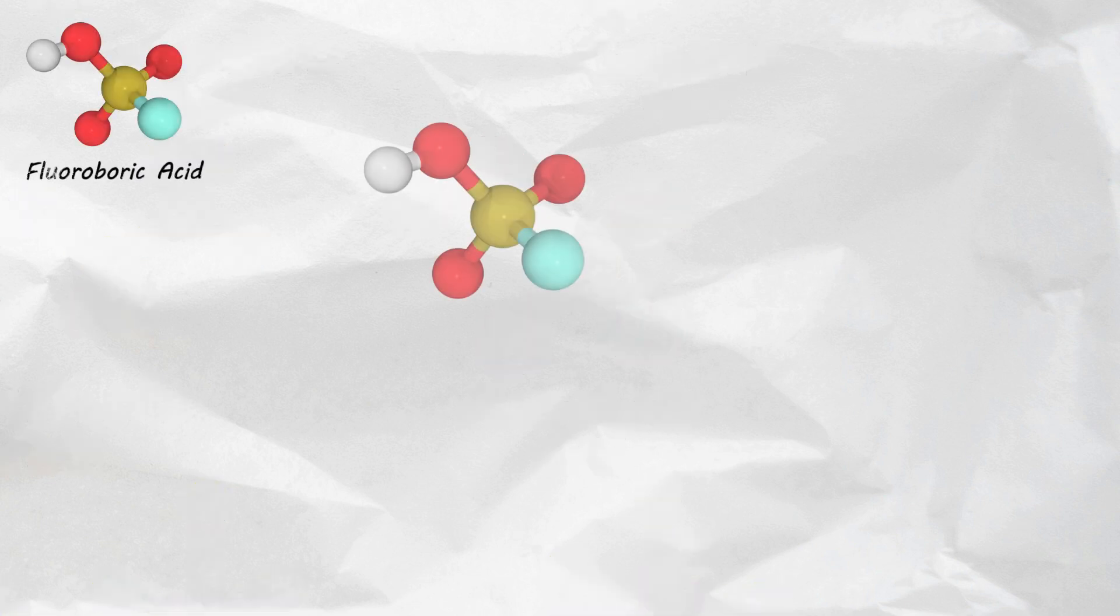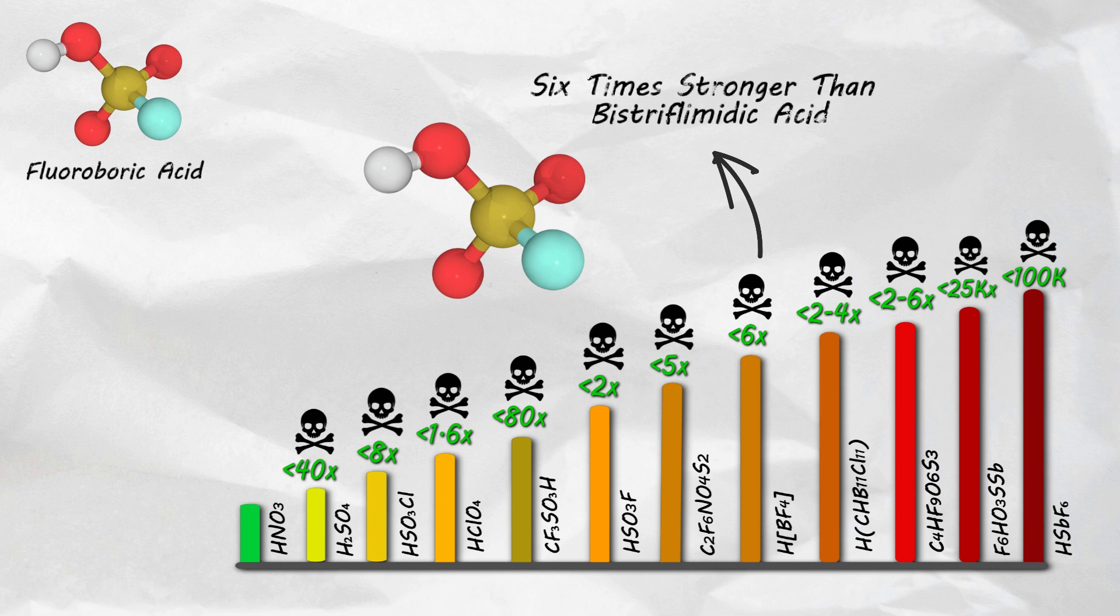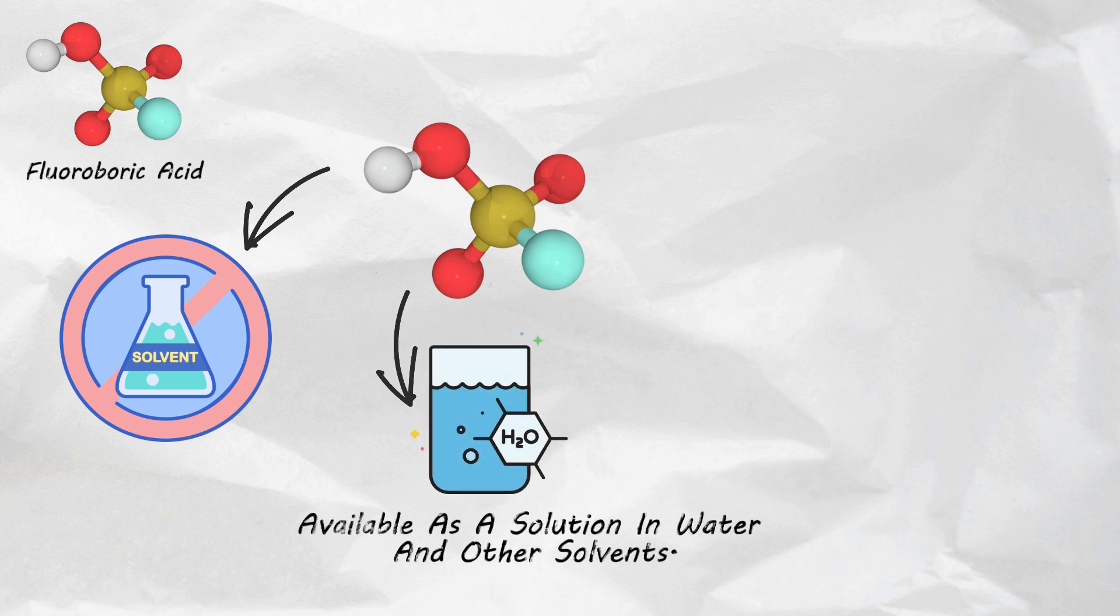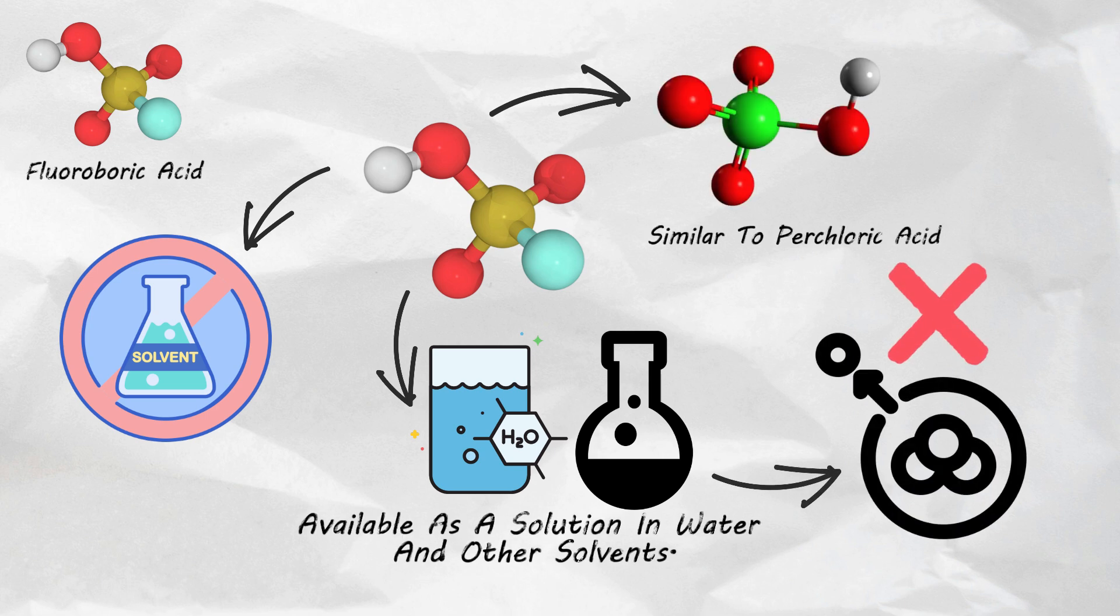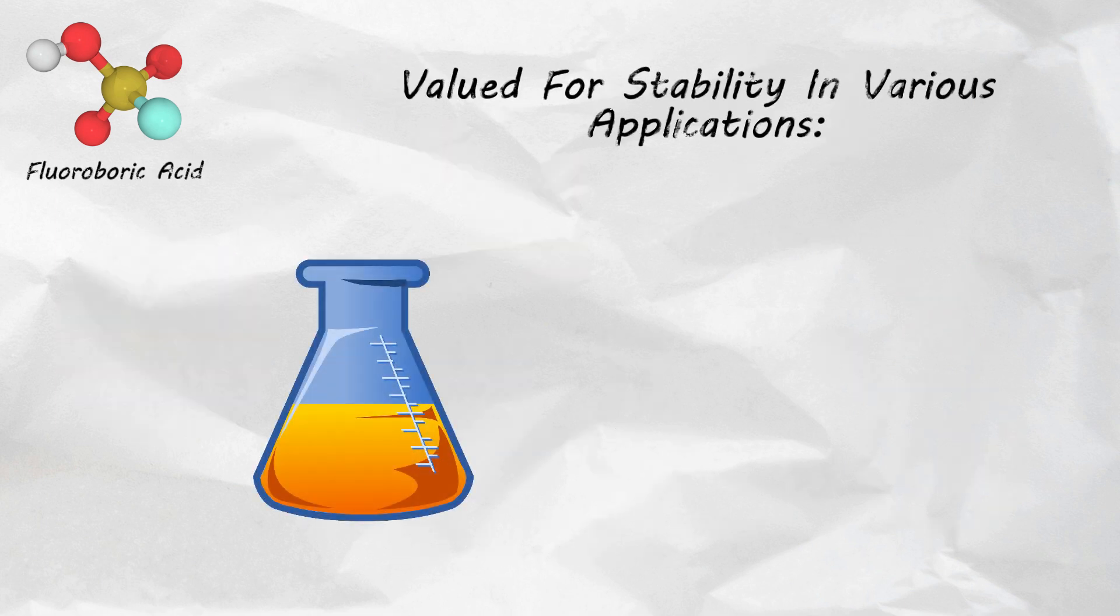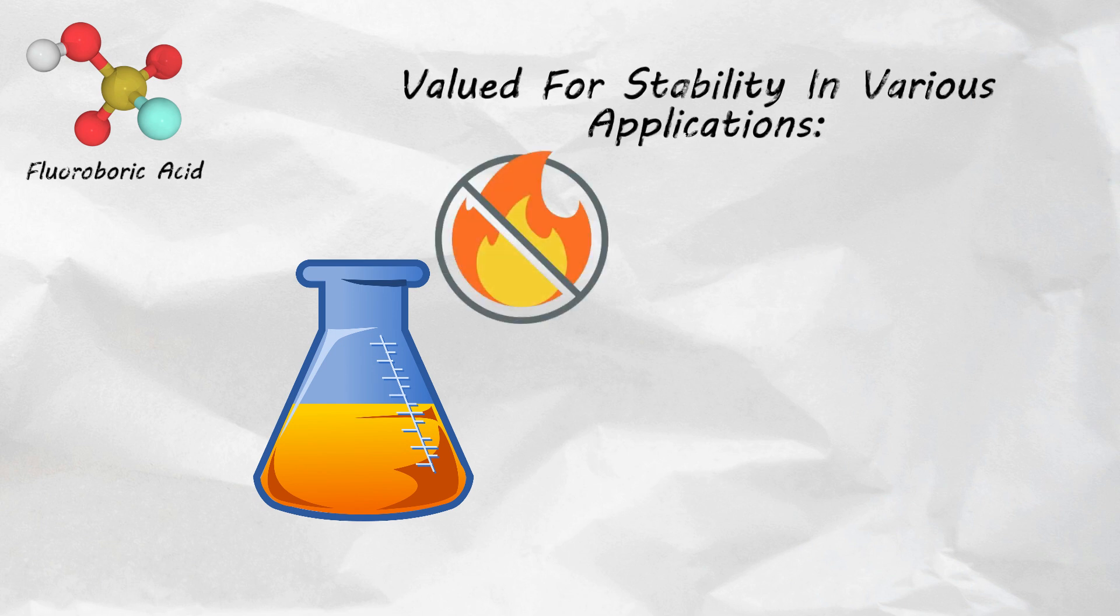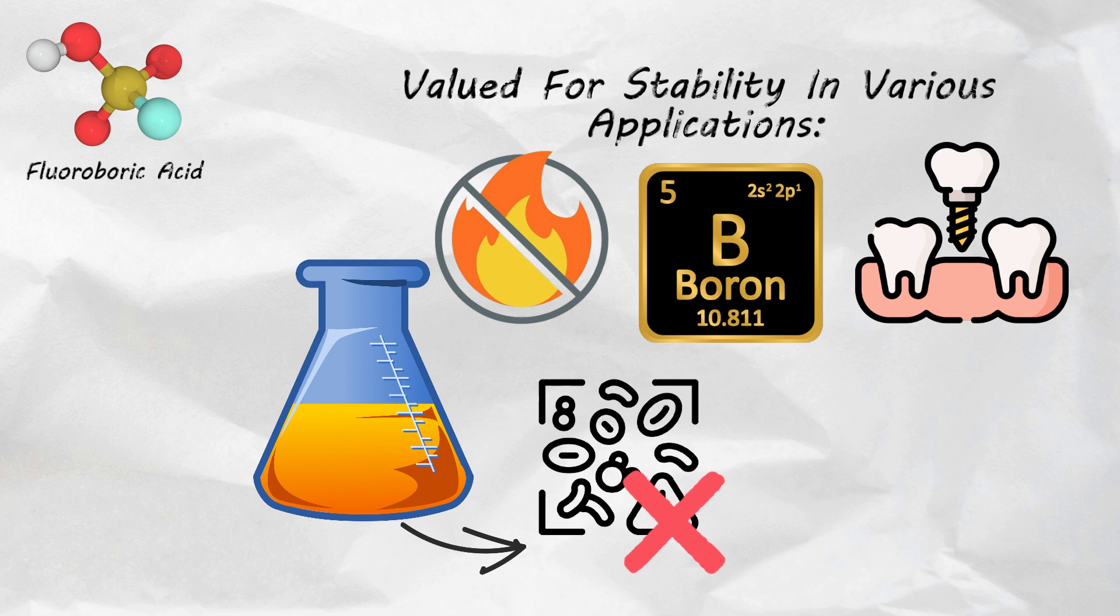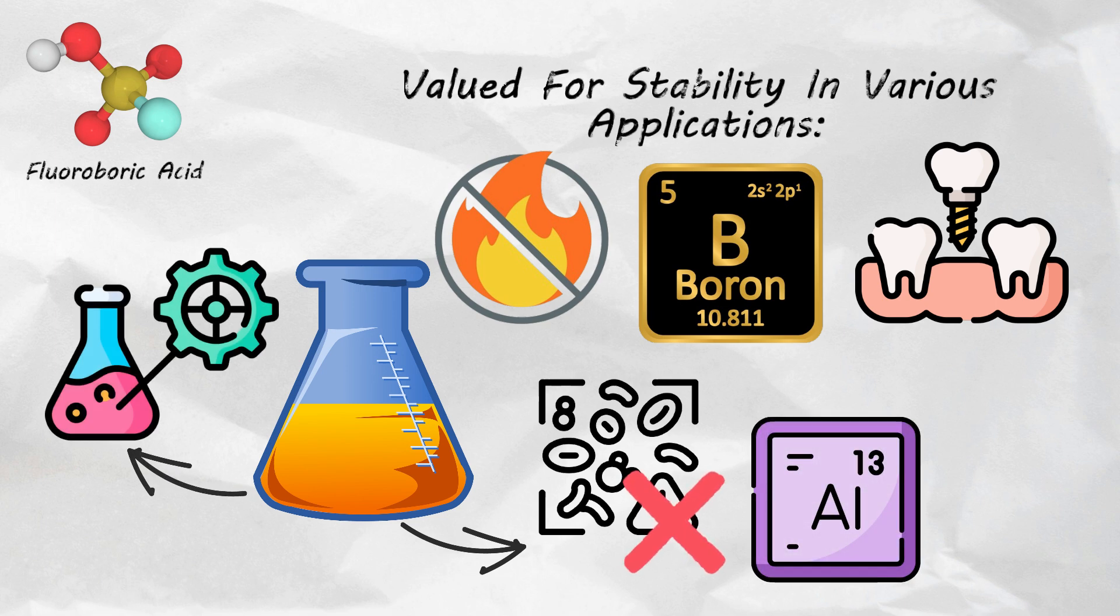Fluoroboric acid. This inorganic compound is approximately six times stronger than bistriflimidic acid. While lacking a pure solvent-free form, it is commercially available as a solution in water and other solvents. It shares similarities with perchloric acid but without triggering oxidation reactions when it interacts with other substances. Its stable nature makes it valuable for various applications including the production of flame-retardant materials, the chemical element boron and dental implants. Fluoroboric acid is also used in processes to remove surface impurities from aluminum and acting as a catalyst in chemical reactions.